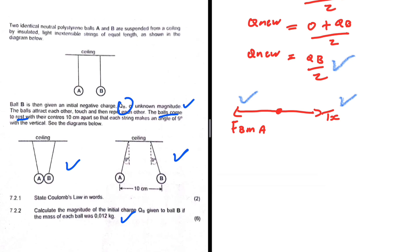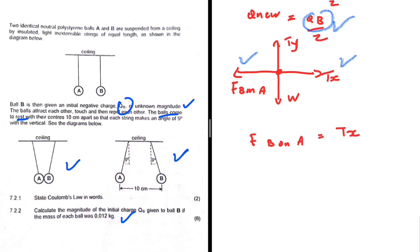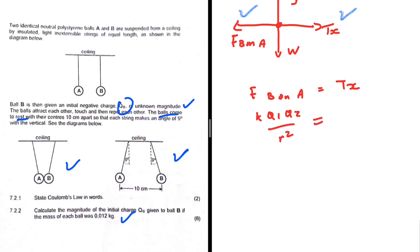We also have the y-component of tension ty balancing the weight of sphere A. Since the balls are at rest, fb_on_a equals tx, the x-component of tension. The electrostatic force is k·q1·q2 / r², and tx equals t·cos(θ).